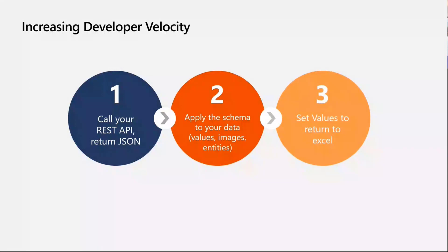Some of you might be wondering why we're doing this. One major reason — the impetus — is about increasing developer velocity. We saw patterns over the years of things folks tried to do through spreadsheets or add-ins, and we wanted to let people get the job done faster. If you're thinking about using these APIs, it's rather simple. If you have a REST API, you can return a JSON structure. We have a documented schema, and if you apply that schema to your data, all you have to do is set those values and pass them into the grid. I'll show a few examples of how that works.